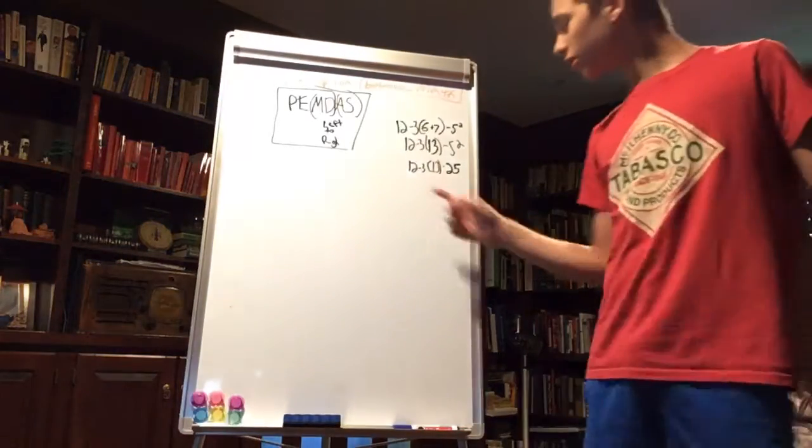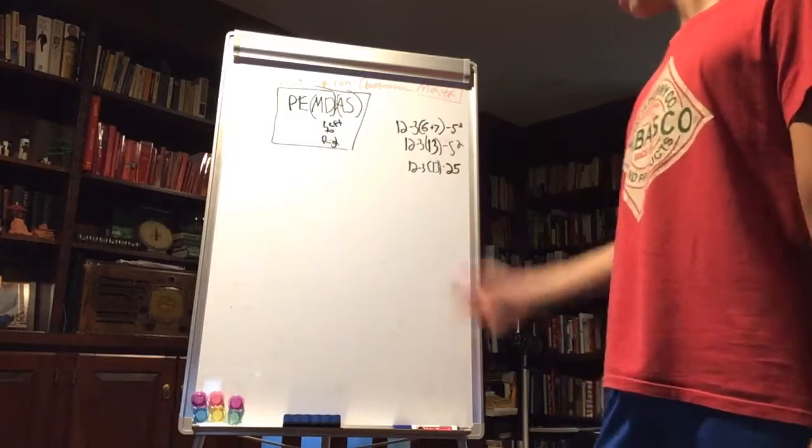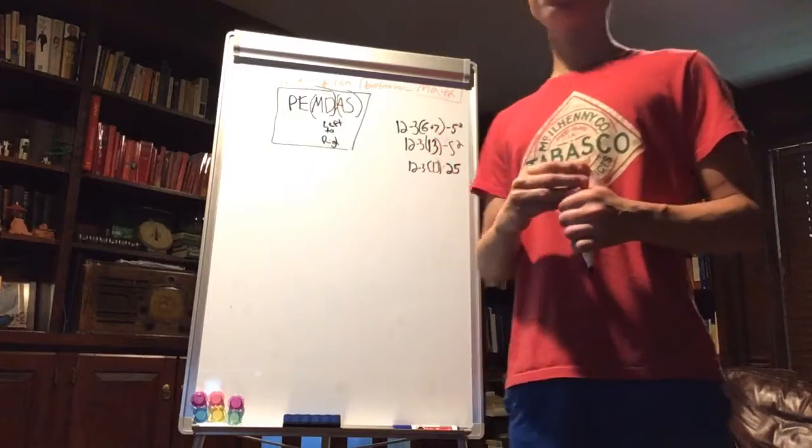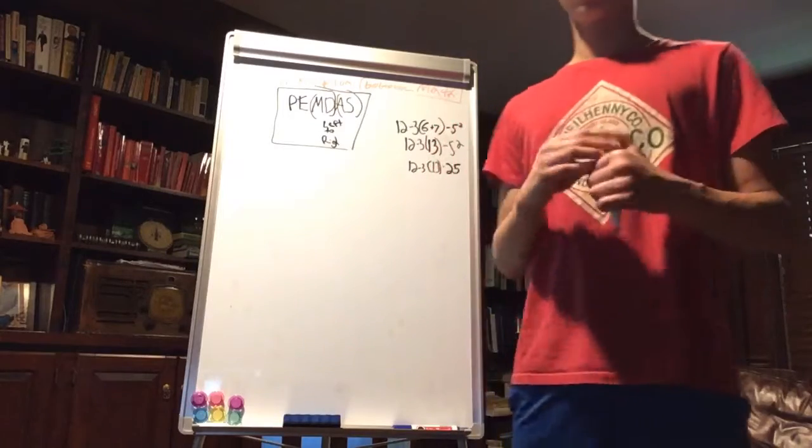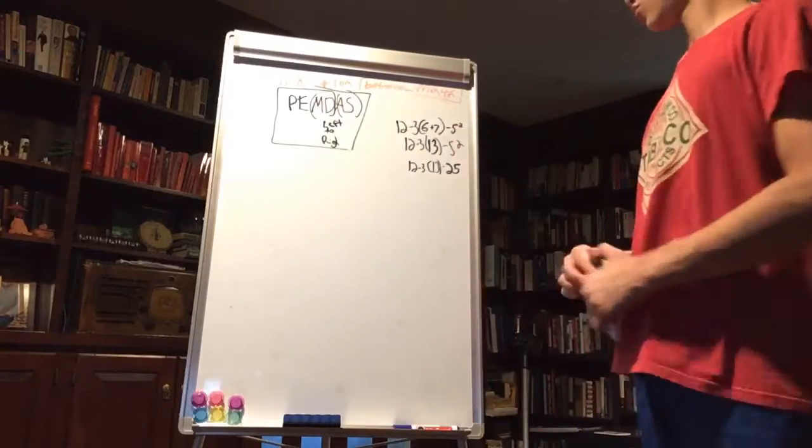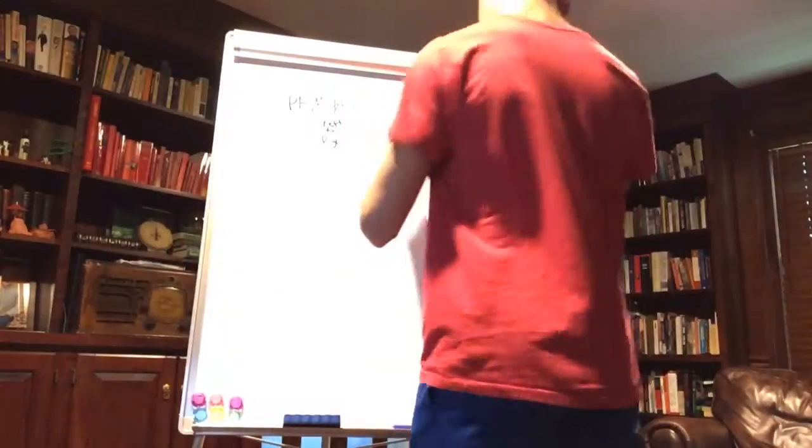And now it can be tempting to just go like that, but you're multiplying 3 times 13 here. So 3 times 13 instead of doing 12 minus 3. So 3 times 13 is 39.